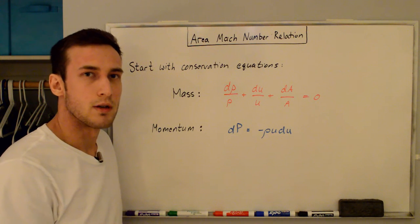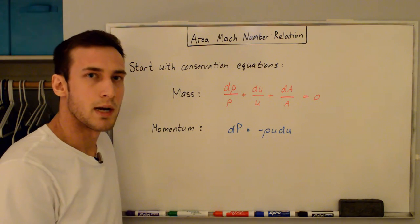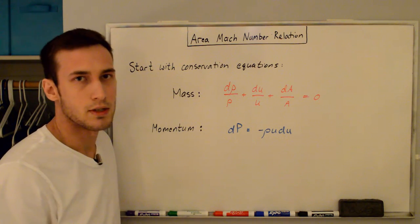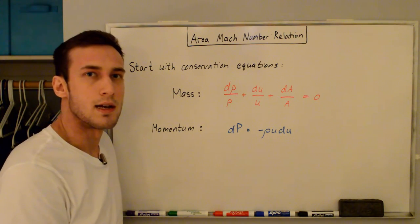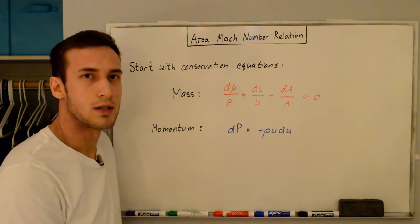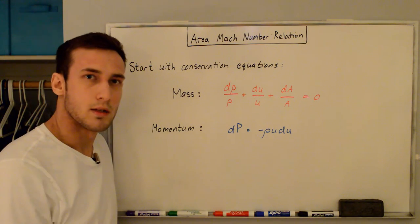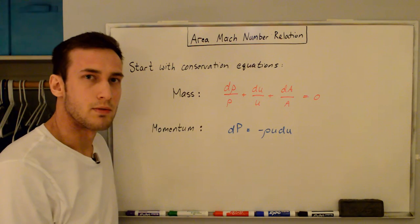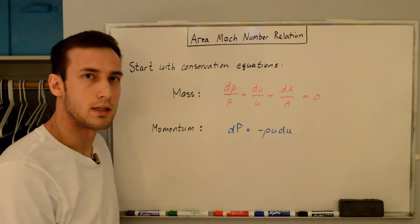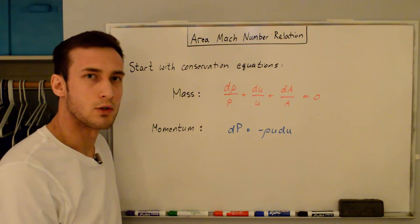Hey everyone. In this video I'll be going through the derivation of the area-Mach number relation, what it means, and its consequences. If you're interested in why rocket nozzles are shaped the way that they are, this is an important first step in understanding. Some of the topics in this video have been discussed previously in other videos or blog posts that I have, so check the video description for links to those.